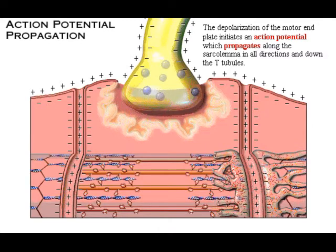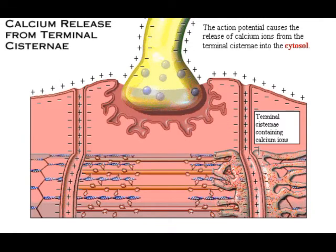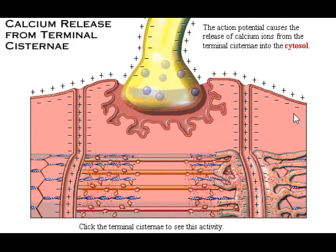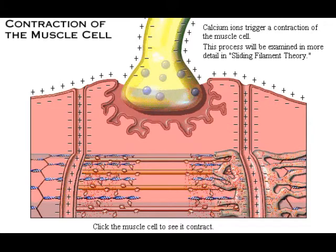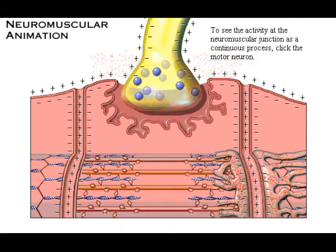The depolarization of the motor end plate initiates an action potential which propagates along the sarcolemma in all directions and down the T-tubules. The action potential causes the release of calcium ions from the terminal cisternae into the cytosol. Calcium ions trigger a contraction of the muscle cell. This process will be examined in more detail in sliding filament theory. To see the activity at the neuromuscular junction as a continuous process, click the motor neuron.